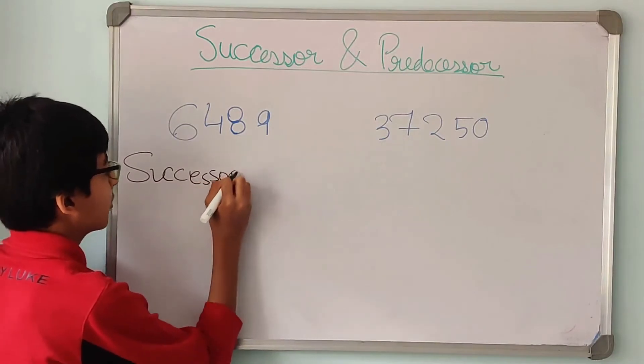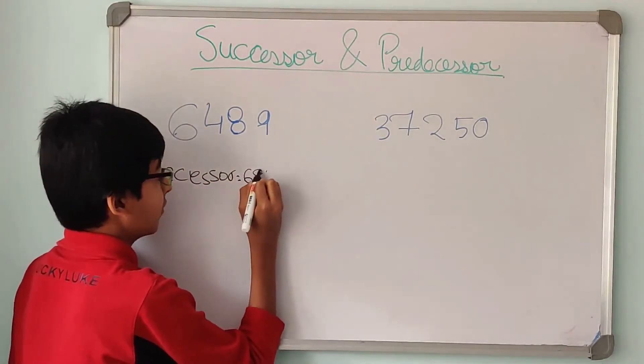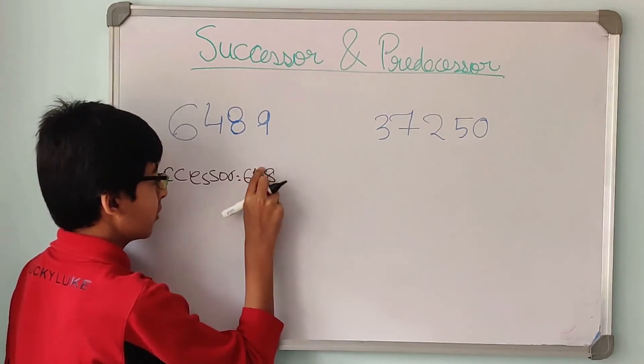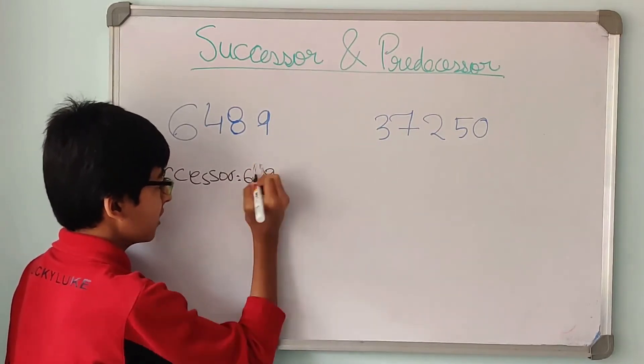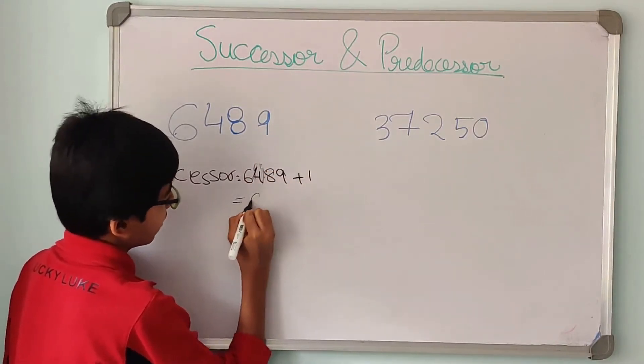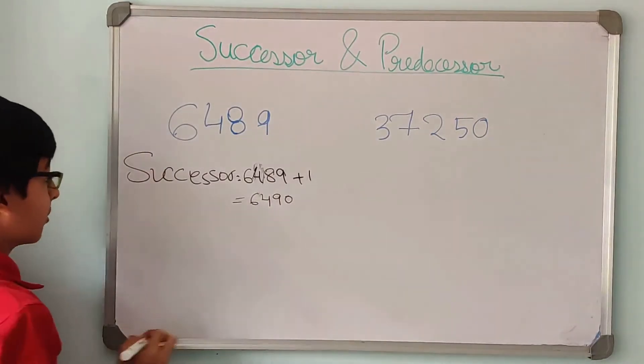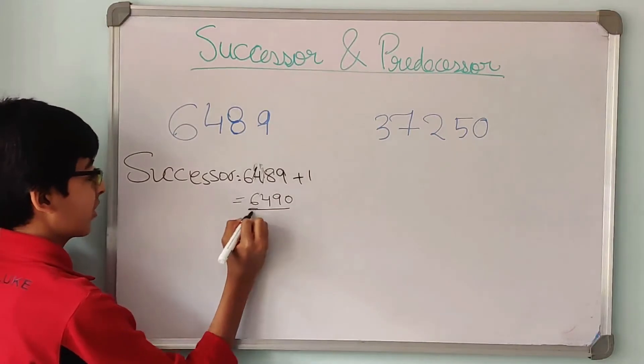So the successor of 6489 is the number after it. 6489 plus 1 gives us 6490. Now this is the successor.